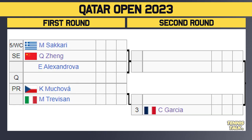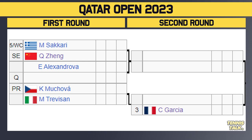Going to the bottom half of the draw now, and one of the best matches of the first round: number five seed Kasatkina takes on Zhang, who just made the semifinals last week. In fact, both ladies made semifinals last week in their respective events, so huge first round matchup. The winner of that match will take on either Alexandrova or a qualifier in the second round. Then we've got Mukhova versus Trevisan. The winner of that match will take on the number three seed Garcia, who gets a bye in the first round. Then we've got Kasatkina — the sixth seed — taking on a qualifier. The winner of that match takes on either Badosa or Haddad Maia — another blockbuster first round matchup.